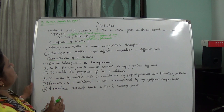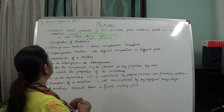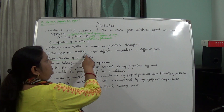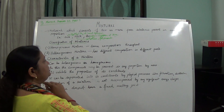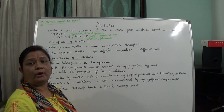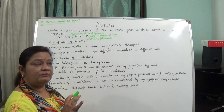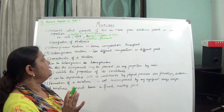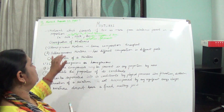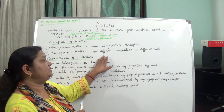Now let's come to the classification of mixtures. It is of two types: homogeneous mixture and heterogeneous mixture. When we talk about a homogeneous mixture, it has the same composition throughout. Like if we take sugar and water and dissolve it — can we make out the sugar and can we make out the water? We can't. So the composition is the same throughout the mixture, and so it is known as a homogeneous mixture.